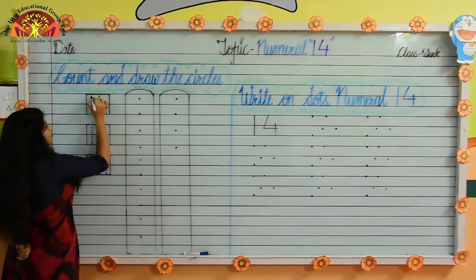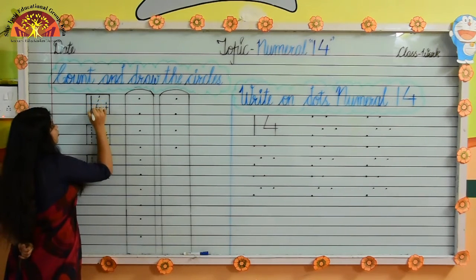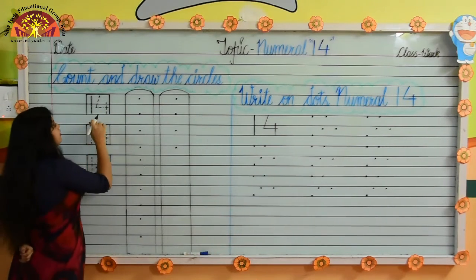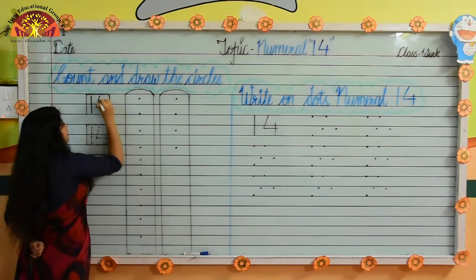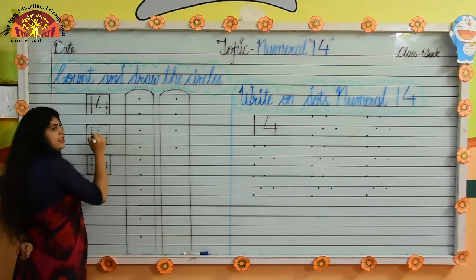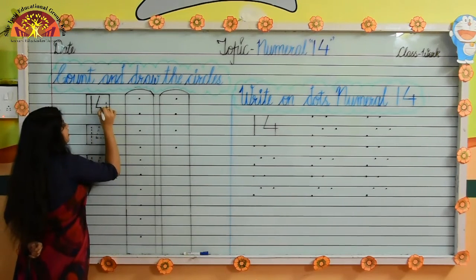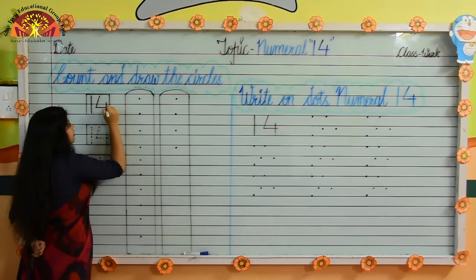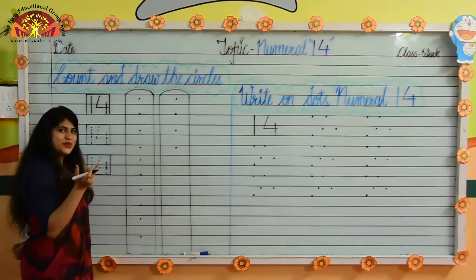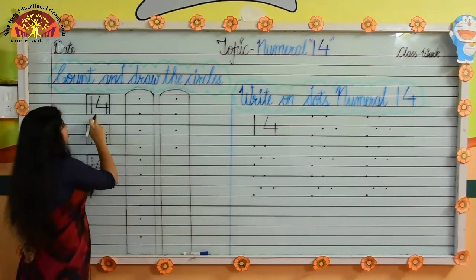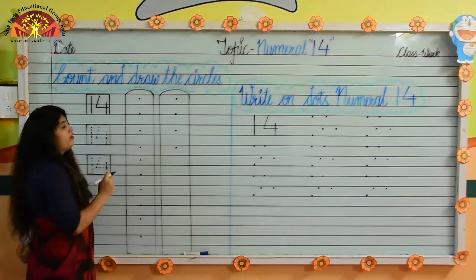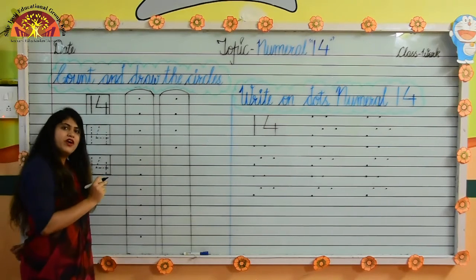Put your crayon here, make standing line. Hold your crayon tightly, like this, then make slanting line, like this. Stop here, then make sleeping line, then make standing line, like this. Tell me kids, which numeral is this? 14.